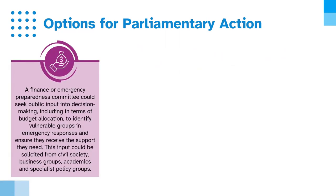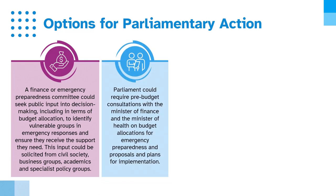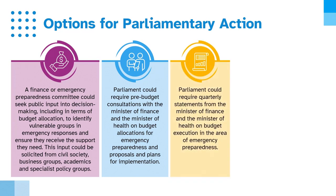A finance or emergency preparedness committee could seek public input into decision making, including in terms of budget allocation, to identify vulnerable groups in emergency responses and ensure that they receive the support they need. This input could be solicited from civil society, business groups, academics and specialist policy groups. Parliament could require pre-budget consultations with the Minister of Finance and the Minister of Health on budget allocations for emergency preparedness and proposals and plans for implementation. Parliament could also require quarterly statements from the Minister of Finance and the Minister of Health on budget execution in the area of emergency preparedness.